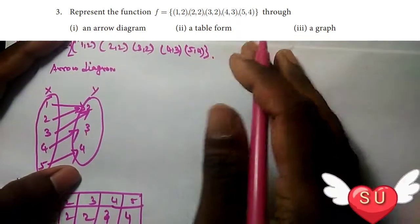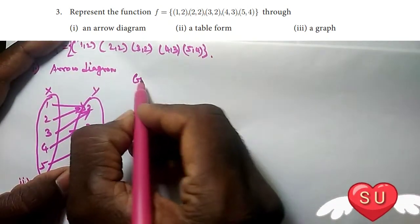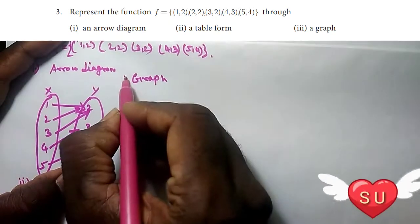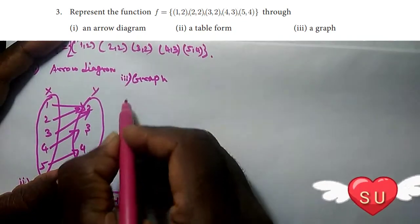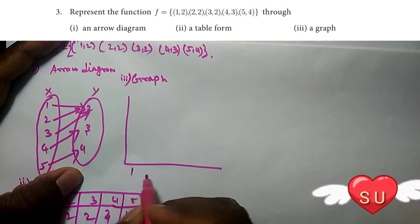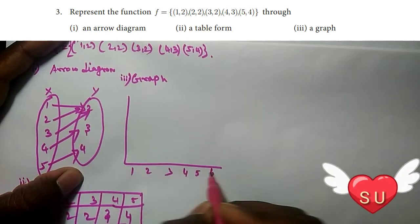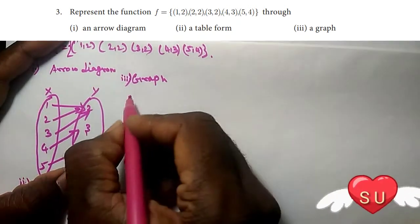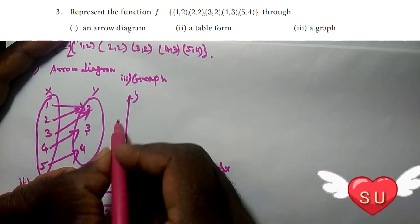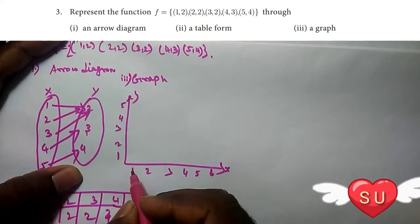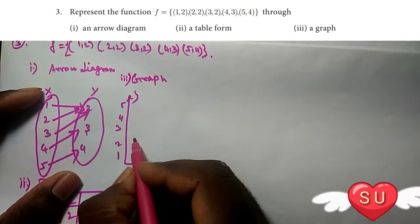Next, I have the graph. Third is the graph. On the graph, the minor points are written. On the x-axis: 1, 2, 3, 4, 5, 6. On the y-axis: 1, 2, 3, 4, 5.